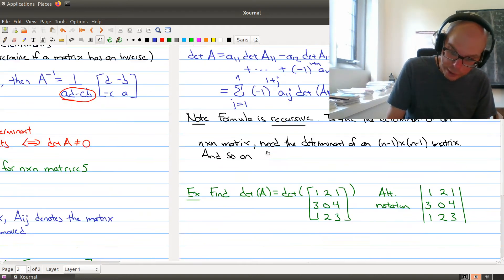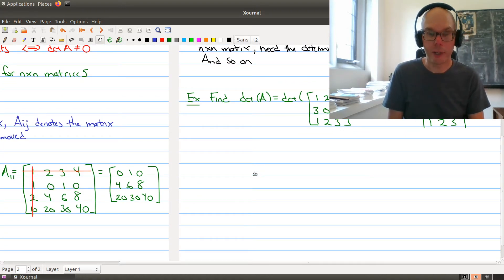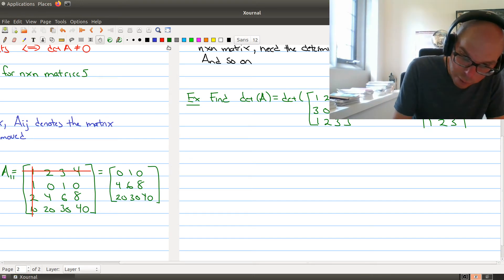So let me illustrate how to do this using an example of a 3 by 3 matrix. So I would like to compute the determinant of the matrix 1, 2, 1, 3, 0, 4, 1, 2, 3. And before I go any further, let me just point out that there's an alternative notation. Sometimes if we're interested in finding the determinant of a matrix, we will sometimes write the array of numbers and then put absolute value signs around it to mean that we're looking at the determinant of the matrix. So, let's use the formula.